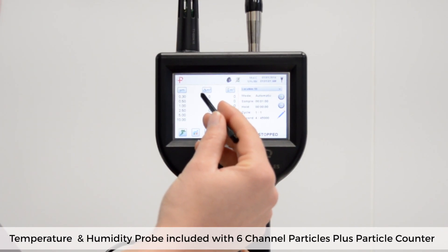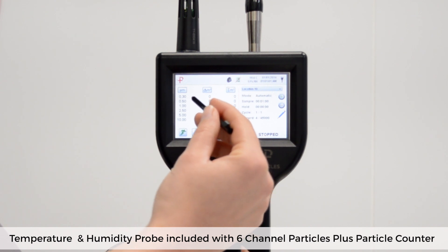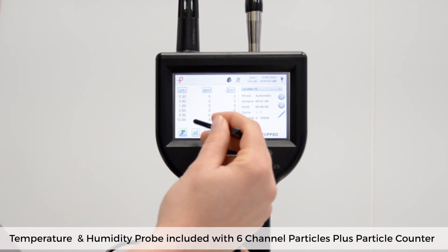The particle sizes the unit will measure are shown on the home screen. This is a six channel unit so there are six rows here ranging from 0.3 micron to 10 micron. These are shown in the first column.